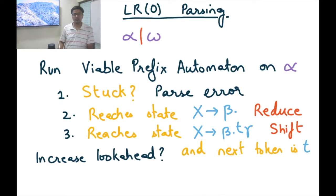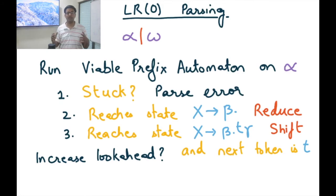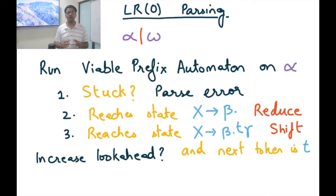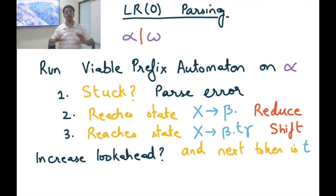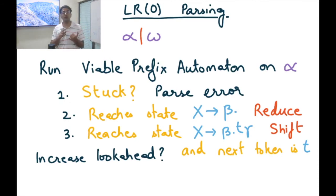This is the LR0 parsing algorithm. In the initial exposition of shift-reduce parsing, an oracle told us whether to shift or reduce. Now we have an automaton making that decision. It can say shift, reduce, parse error (if stuck), or throw a conflict. If it throws a conflict on any particular string, the grammar is not an LR0 grammar.